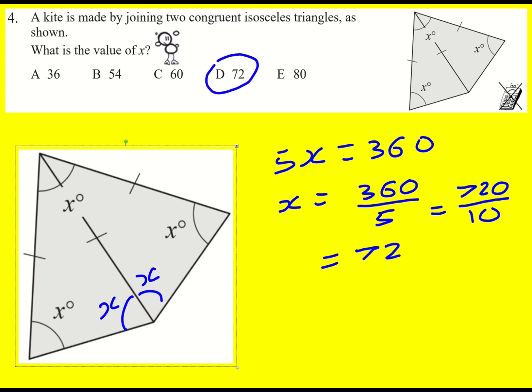I could have instead just looked at a single one of the triangles and made this a half x and then it would have been two and a half x is equal to 180 but it just seems overcomplicating it to involve a fraction so that's why I went with this route.